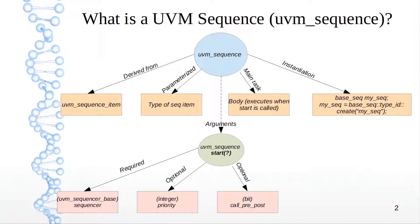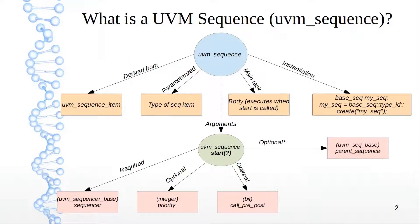The pre-body task is where you can, for example, turn on constraints. If you have a set of active sequences you want to maintain, in the pre-body you can register the active sequences, and in the post-body you can de-register or remove them. Then there is another optional argument — I've added an asterisk because there are two different usages of this. It is called the UVM sequence base, and this is the parent sequence, which is of type UVM sequence base.